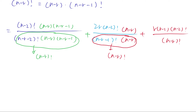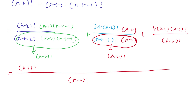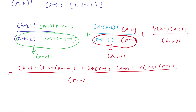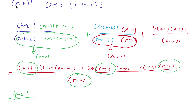Adding up the numerators: over (n-r) factorial times (n-2) factorial, we get (n-r)(n-r-1) plus 2r(n-r) plus r(r-1). We notice that (n-2) factorial appears in all terms, so we factor it out along with (n-r) factorial.